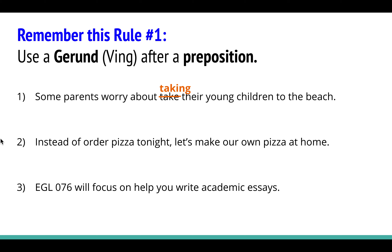Let's look at number two. Find the preposition and change the verb after it to a gerund. The preposition is 'of,' followed by 'order' — that's not the gerund form, so change it to 'ordering.' 'Instead of ordering pizza tonight, let's make our own pizza at home.' The verb 'make' doesn't change because it's part of a new clause separated by a comma. I also see 'at' as another preposition, but it's followed by 'home,' a noun — so no change needed.